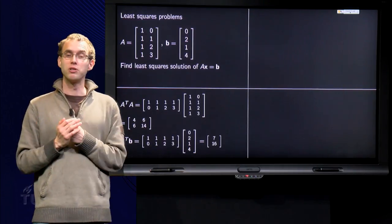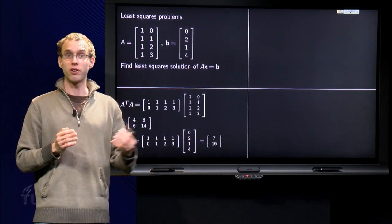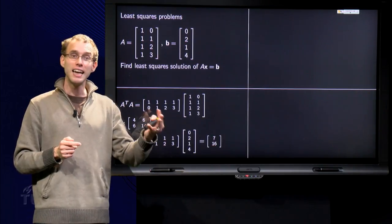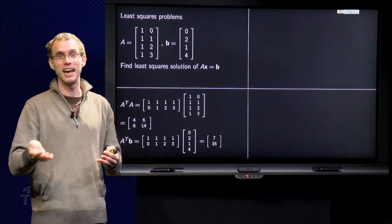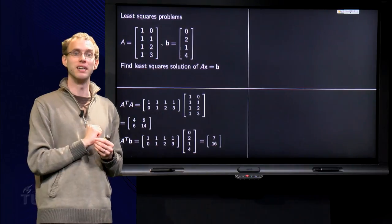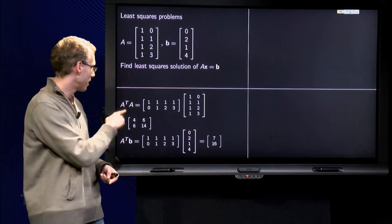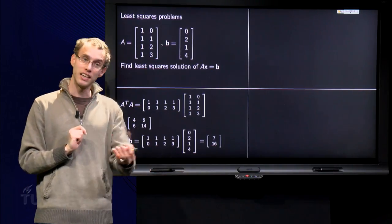So what are we going to do? We are going to use the normal equations, so we need A transpose times A times x hat equals A transpose times b. So we need A transpose times A, and we need A transpose times b.